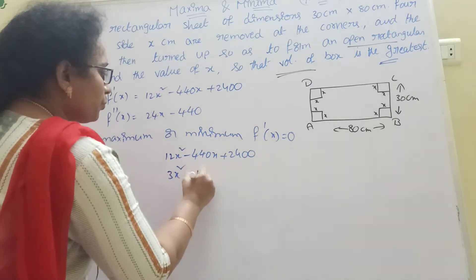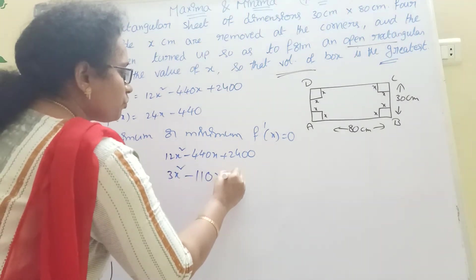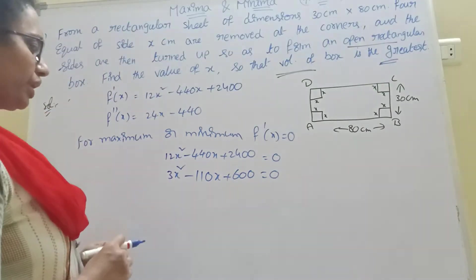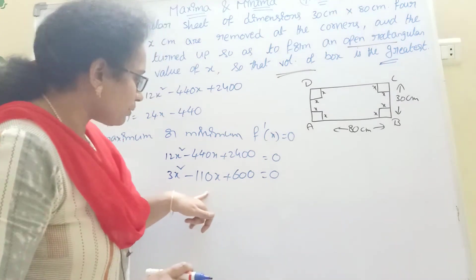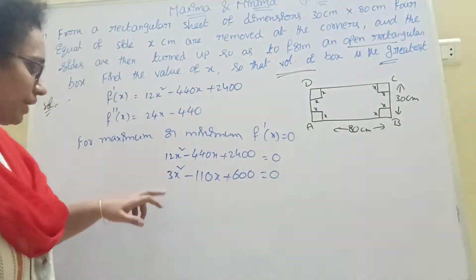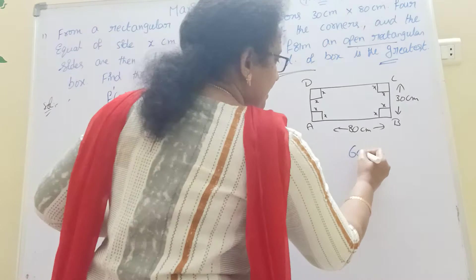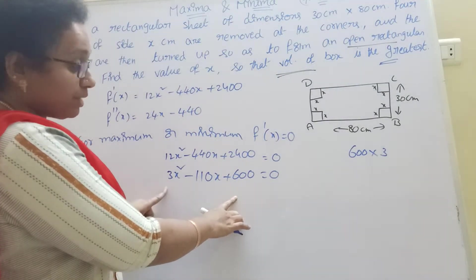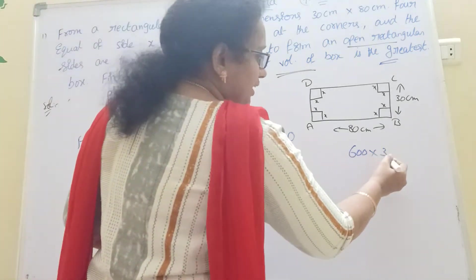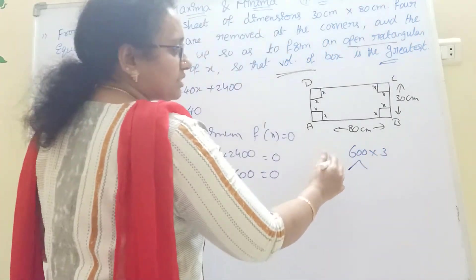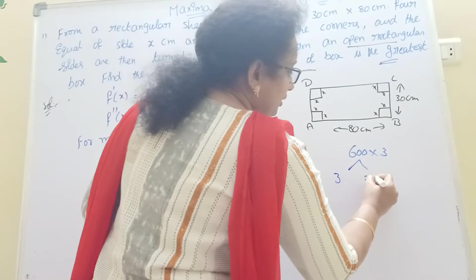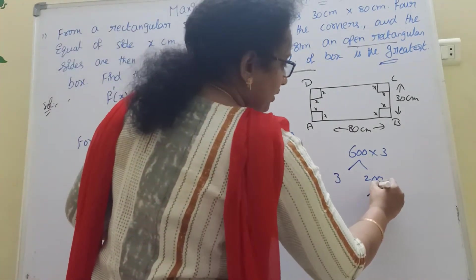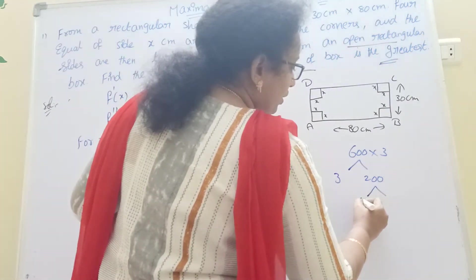Divide through by 4 to simplify — we need to factor this equation. 12x² minus 440x plus 2400 equals 0. Dividing by 4: 3x² minus 110x plus 600 equals 0. For factorization, find two numbers whose product is 3 times 600 = 1800 and sum is minus 110.